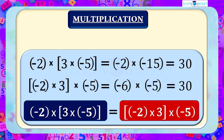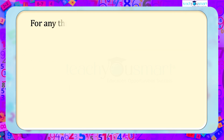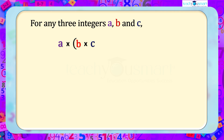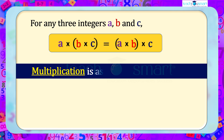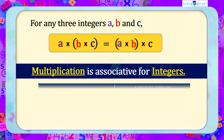Regardless of the grouping of the numbers, the result is the same. In general, we can say that for any three integers A, B, and C: A multiplied by (B multiplied by C) equals (A multiplied by B) multiplied by C. Therefore, multiplication is associative for integers.